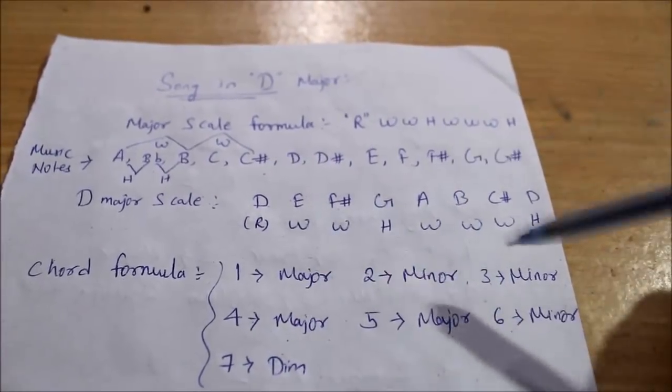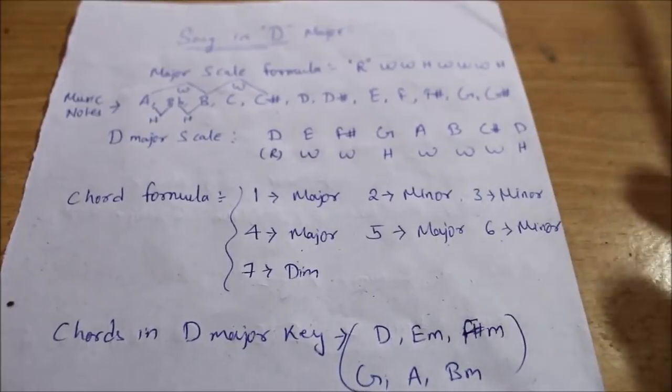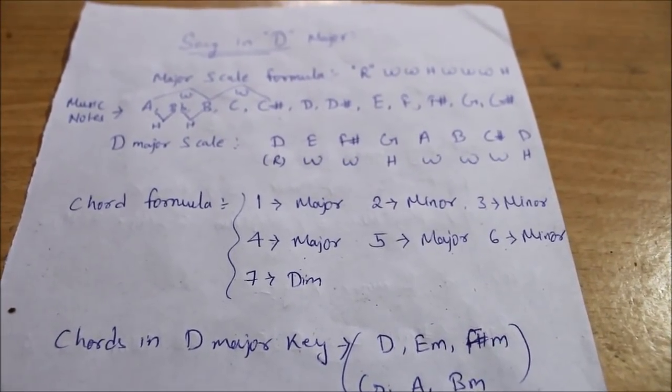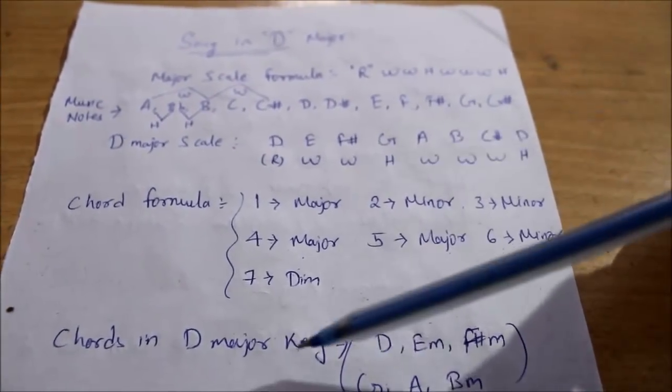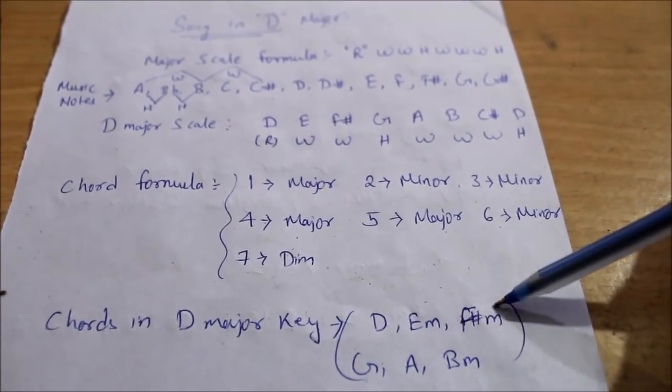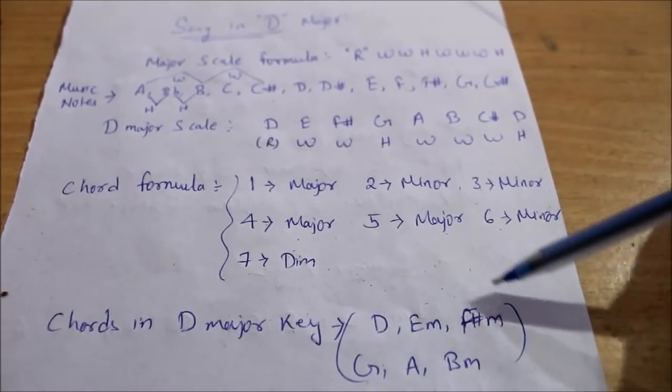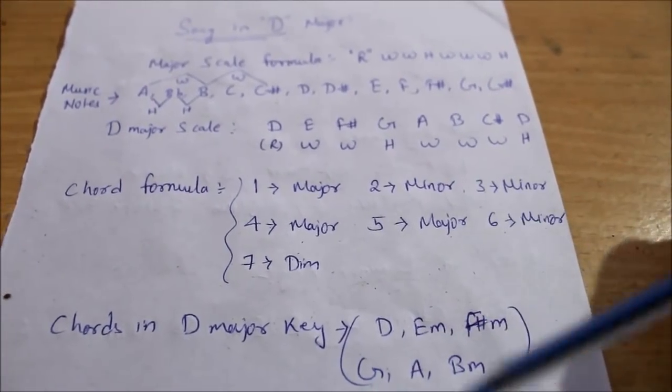If you need this pattern, we will give it on the website - that link is in the description. So what do we have in D major? The chords in D major key are: D, E minor, F# minor, G major, A major, and B minor. With these six chords, you can do your composition.